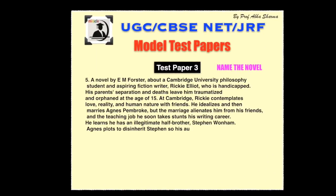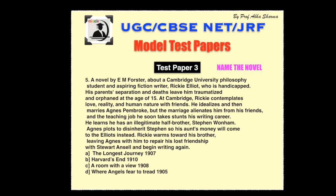Question number five. A novel by E.M. Forster about a Cambridge University philosophy student and aspiring fiction writer, Ricky Elliott, who is handicapped. His parents' separation and deaths leave him traumatized and orphaned at the age of 15. At Cambridge, Ricky contemplates love, reality, and nature with friends. He idolizes and then marries Agnes Pembroke, but the marriage alienates him from his friends and the teaching job he takes stunts his writing career. He learns he has an illegitimate half-brother, Stephen Wonham. Agnes plots to disinherit Stephen so that his aunt's money will come to the Elliotts instead. Ricky warms towards his brother, leaving Agnes to repair his lost friendship with Stewart Ansell and begin writing again. Name the novel.